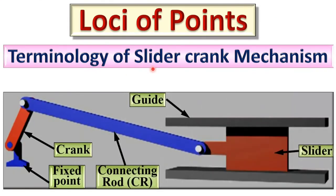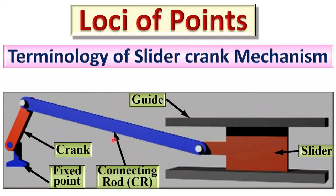Now let us see the terminology of the slider crank mechanism, which is very important to solve problems related to locus of points. The crank always has rotary motion. The fixed point does not move, that is why it is called the fixed point. The slider slides along the guide, and the blue color is the connecting rod which connects the crank to the slider. In the single slider mechanism there are four links: the crank, the connecting rod, the slider, and the frame which is fixed. The link with the shortest length is the crank.